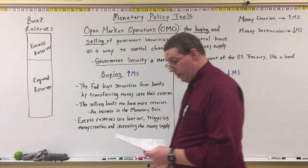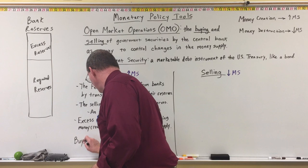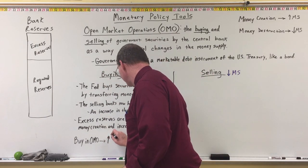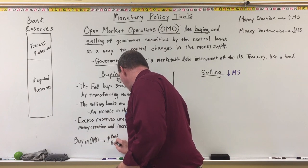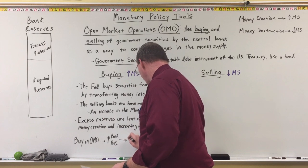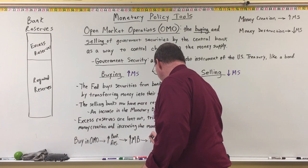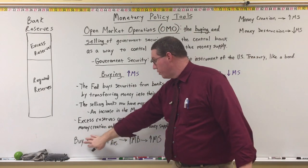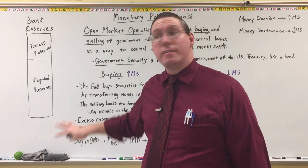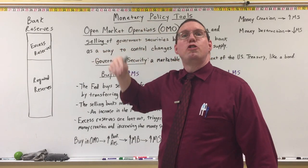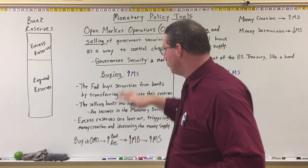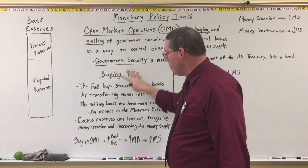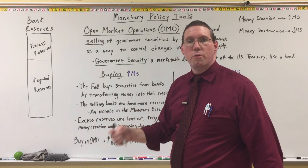Here's the diagram: the Fed buys in open market operations, which leads to an increase in bank reserves, which leads to an increase in the monetary base, which should then lead to an increase in the money supply. This is the mechanism by which the Fed manipulates the money supply on a day-to-day basis. When the Fed does this, the effects on the money supply are relatively minor adjustments — not gigantic swings that sway the whole economy in one or two days.